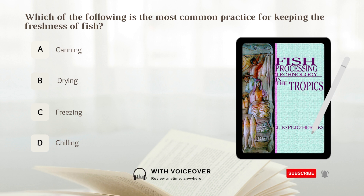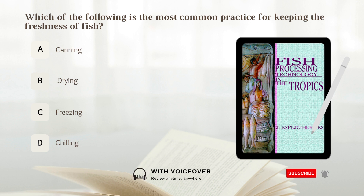Which of the following is the most common practice for keeping the freshness of fish? A. Canning. B. Drying. C. Freezing. D. Chilling. Answer: D. Chilling.